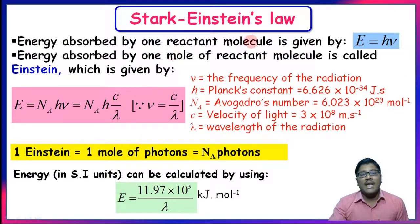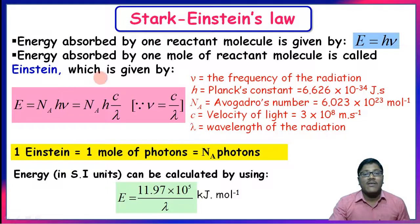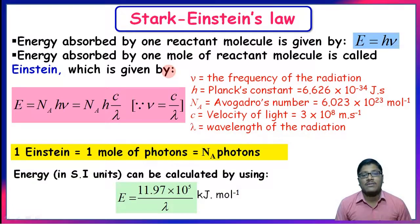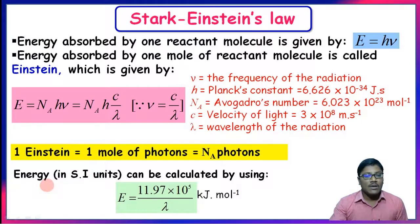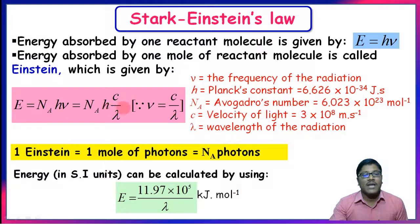The energy absorbed by one reactant molecule is given by E = hν, since energy is directly proportional to frequency ν. The energy absorbed by one mole of reactant molecules is called an Einstein, given by E = Nhν, because one mole contains Avogadro's number (6.023 × 10²³) of molecules. Therefore E = Nhν = Nhc/λ, since ν = c/λ. The energy of one Einstein in SI units can be calculated using E = (11.97 × 10⁵)/λ kJ/mol, obtained by substituting all constants into E = Nhc/λ.